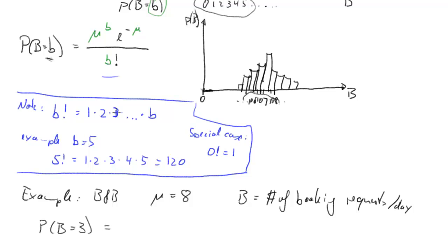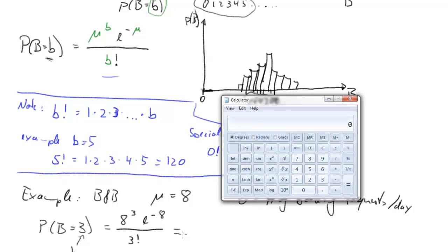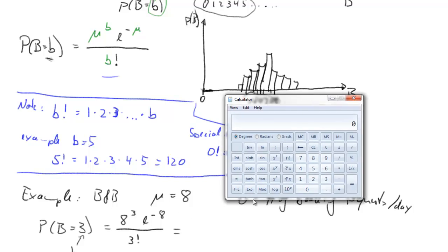Let's apply the formula. Mu is 8, so we have 8 to the power of 3 times e to the negative 8, divided by 3 factorial. To calculate this, we get our calculator out. Let's first check that 5 factorial is indeed 120. The only tricky bit is the exponential — in the Windows calculator you have to press the alternate functions key to access e to the x.